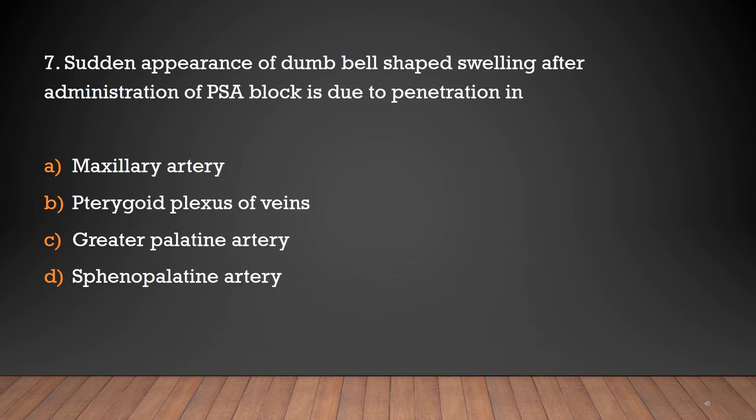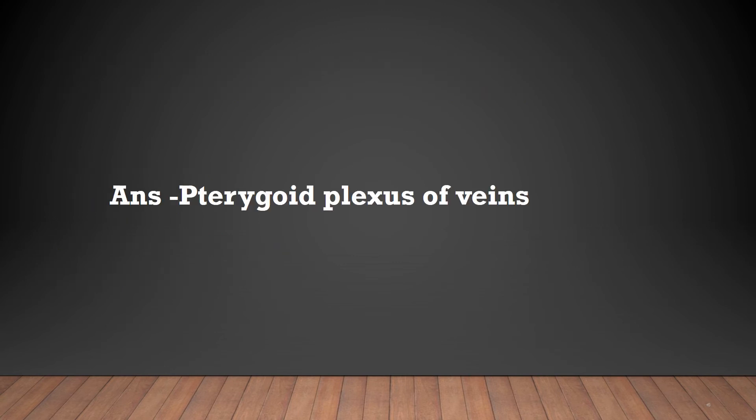Sudden appearance of dumbbell-shaped swelling after administration of PSA block is due to penetration in: Maxillary artery, Pterygoid plexus of veins, Greater palatine artery, or Sphenopalatine artery? Answer: Pterygoid plexus of veins.